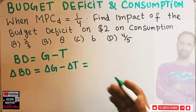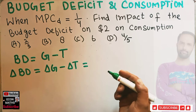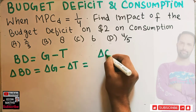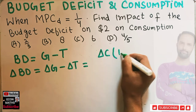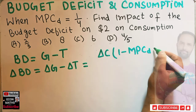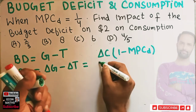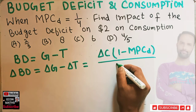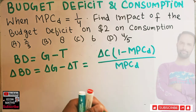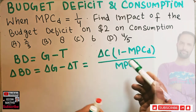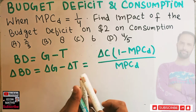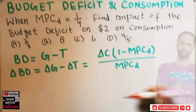The formula is: change in budget deficit equals change in consumption times (one minus marginal propensity to consume out of disposable income) divided by marginal propensity to consume out of disposable income. If you are wondering how I derived this result, I have shown this derivation in earlier videos — you can check those videos.